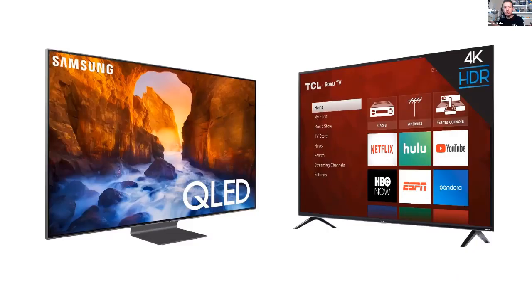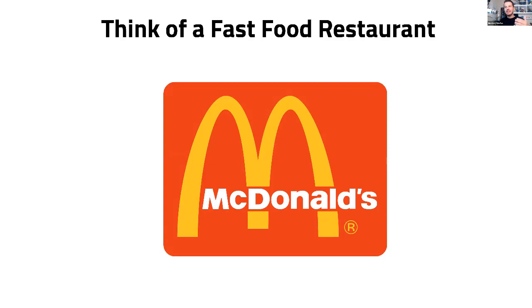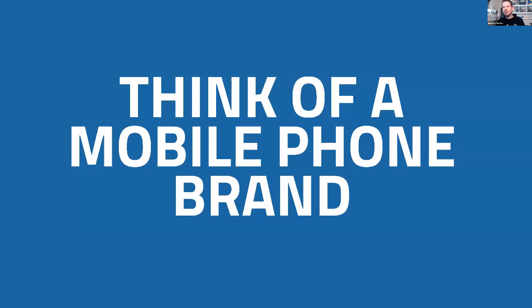For example, if you just had to pick a TV, are you going to pick Samsung or TCL? Samsung, because you know it — you're going to pick Samsung even if the other one might be cheaper. Think of a fast food restaurant — McDonald's. Think of a mobile brand — AT&T, Verizon, or iPhone. You probably thought of either the service or the phone you currently have, because it's a fragmented market. You think of the one you're using.